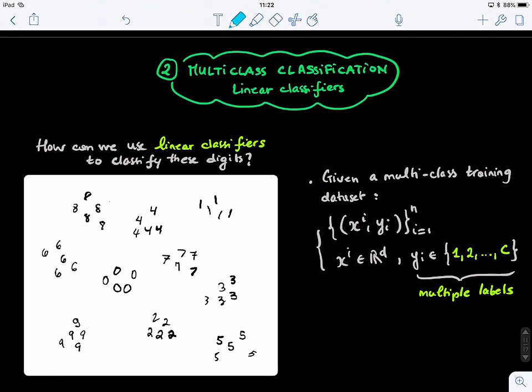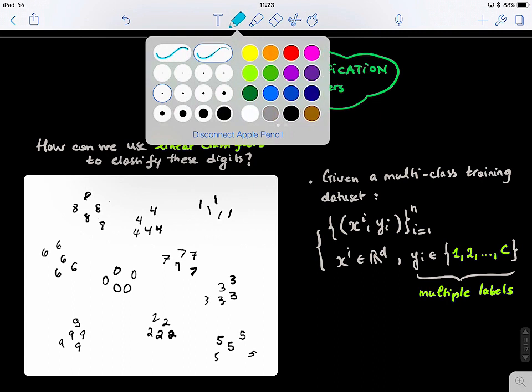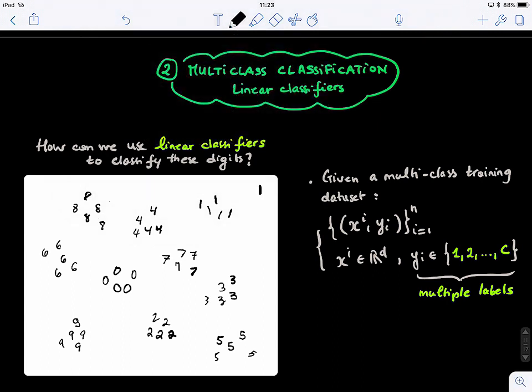Let's look at how we can generalize linear classifiers to solve a multi-class classification problem. So here we have 10 digits. The idea is we want to use linear classifiers to learn how to classify new samples, put them in the right class.